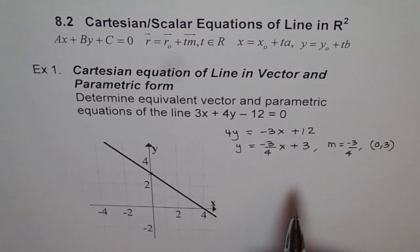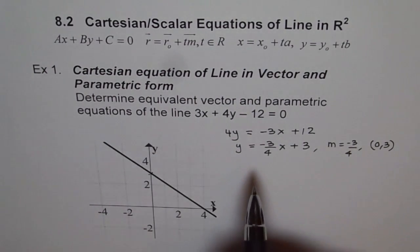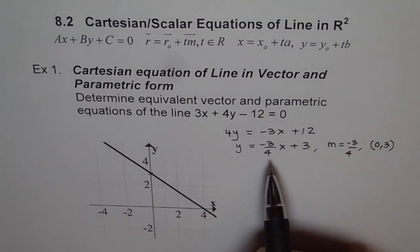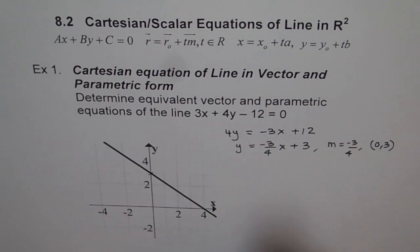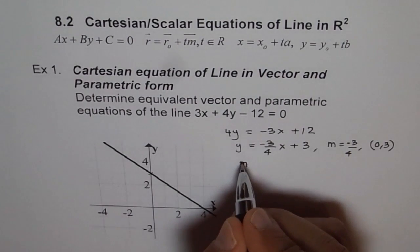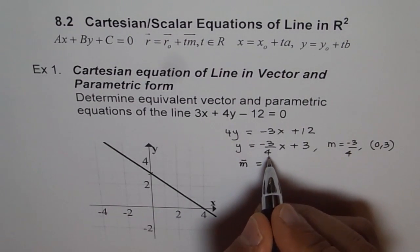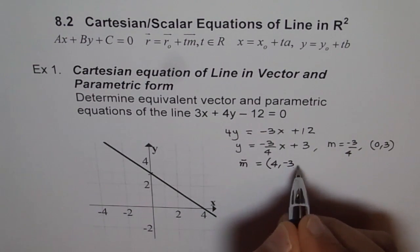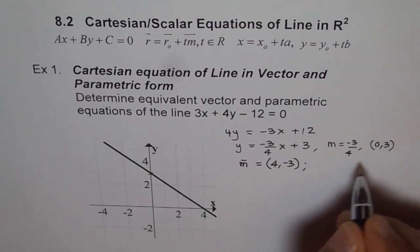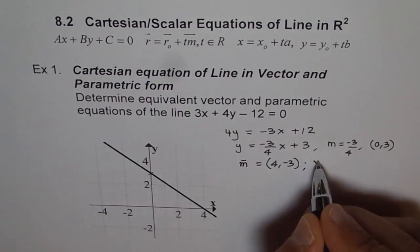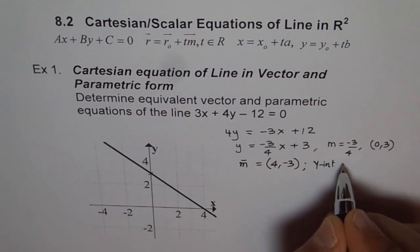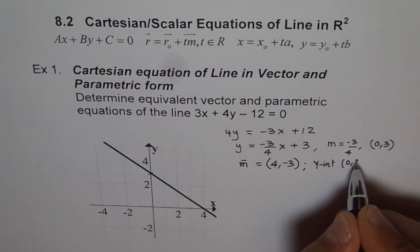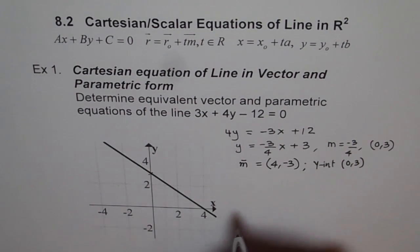And T times direction vector. So what is direction vector? As we learned in section 8.1, direction vector, we can see from the slope, the change in Y over change in X. So direction vector we have is equal to change in X is 4 and minus 3. So that's our direction vector. And the point which we will take here is the Y intercept, which is 0, 3.